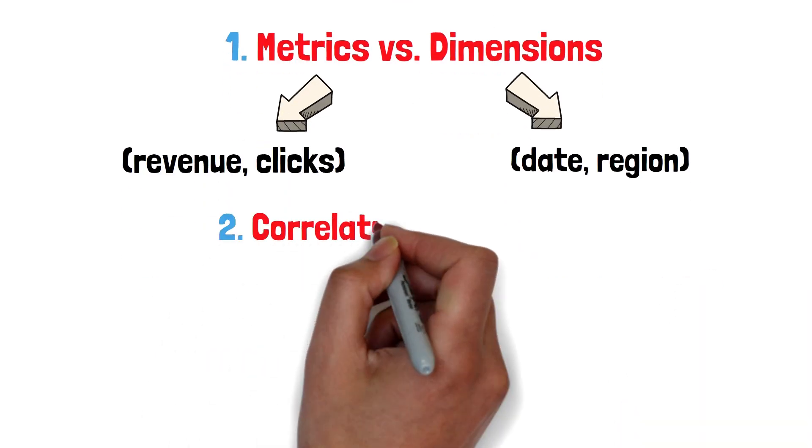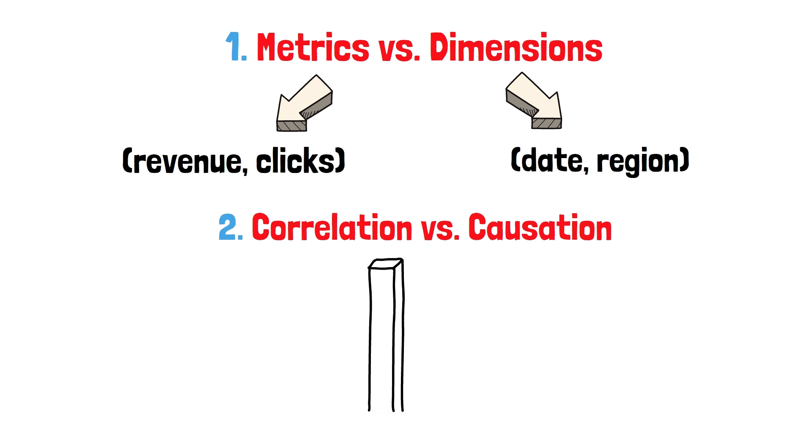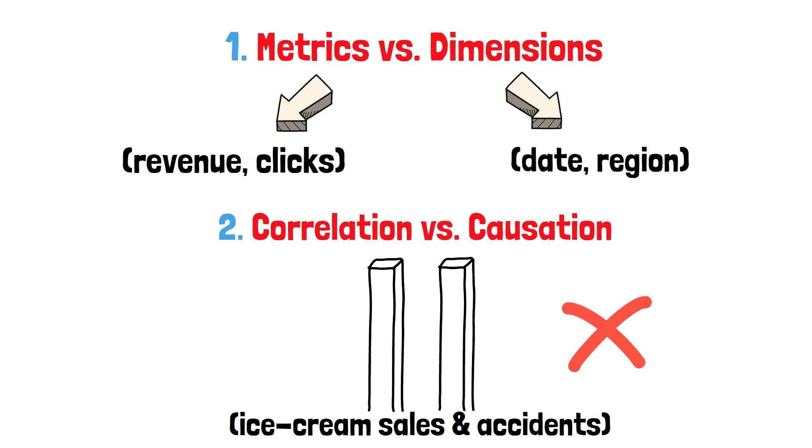2. Correlation versus causation. Two trends moving together, ice cream sales and accidents, don't imply one causes the other.